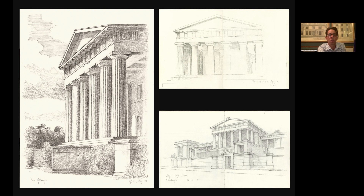I'm going to start with the Doric. These three examples are all quite similar versions of Doric temples: on the top right is a temple in Agrigento in Sicily, below this is the Royal High School in Edinburgh, and on the left is a country house in Hampshire known as the Grange. What we call the Doric order is made up of a post and a beam. The post is a column with a capital on the top, on which rests the beam called the entablature. If we look at the detail of the Doric entablature, you will see that this is punctuated with regularly spaced rectangular blocks, each with three grooves in them.